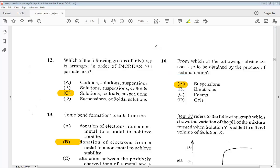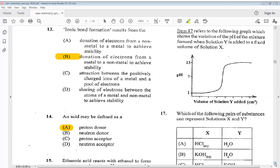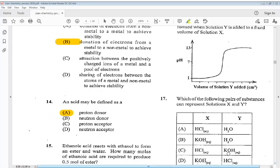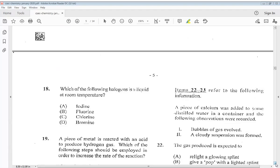Let's go to number 17. Item 17 refers to the following graph which shows the variation of the pH of the mixture formed when solution Y is added to a fixed volume of solution X. So which of the following pairs of substances can represent solutions X and Y? So that would be C. Let's go to number 18. Which of the following halogens is liquid at room temperature? A. Iodine, B. Fluorine, C. Chlorine, or D. Bromine. So the answer for 18 would be D.